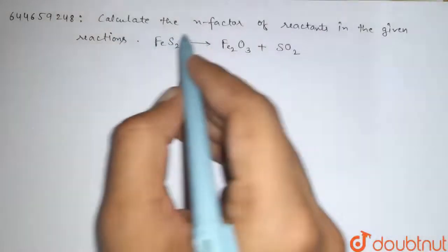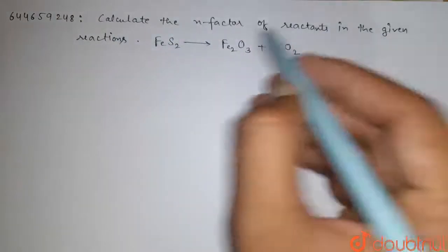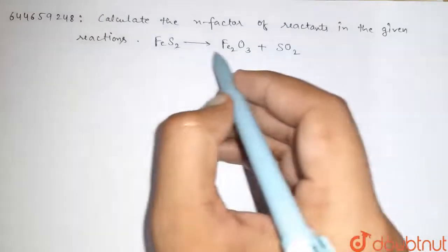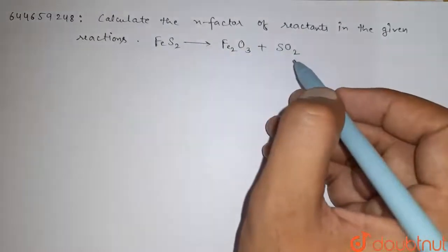Hi guys, here is the question. Calculate the n-factor of reactants in the given reaction: FeS2 → Fe2O3 + SO2.